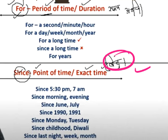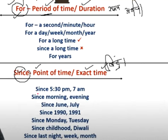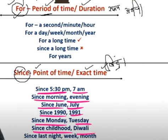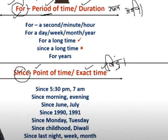Since — what happens? A particular window, a particular point of time, a particular exact time. So we use things like: since 5:30, since 7 a.m., since morning, since Eid, since January, since July, since 1990, since 1991, since Monday, since Tuesday, since childhood, since Diwali, since Holi, since last night, since last week, since last month.